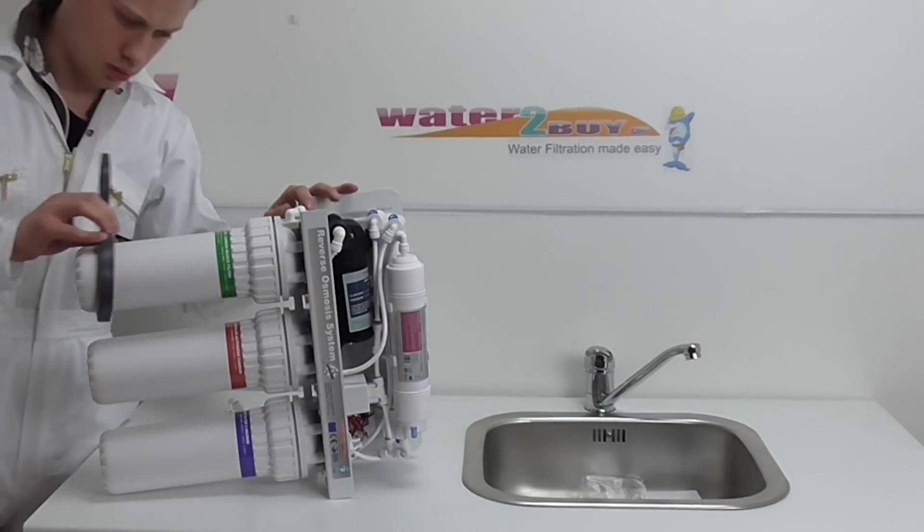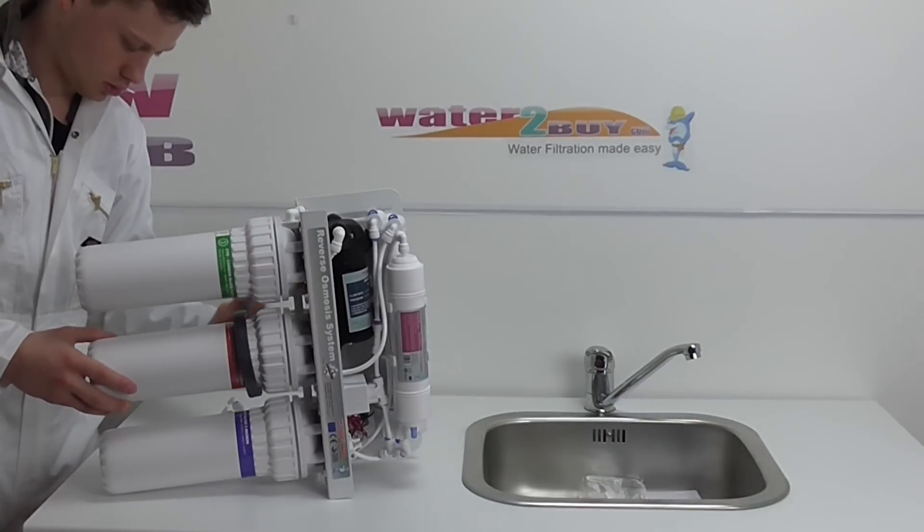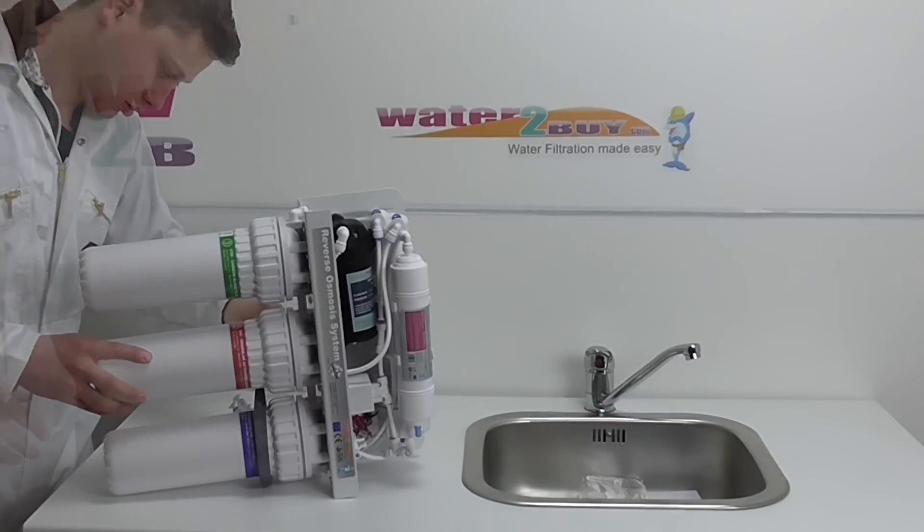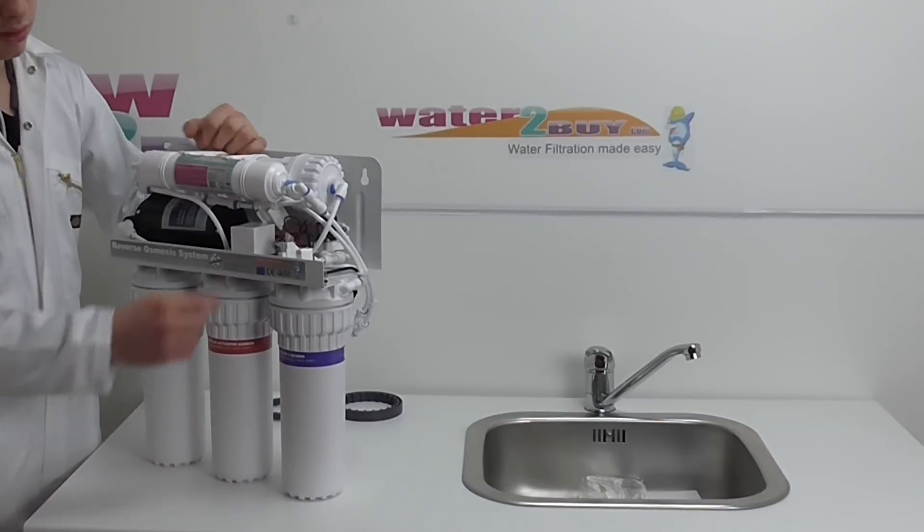Make sure you don't over-tighten as this will cause the O-rings to leak. The blue filter reduces particles. The red filter removes chemicals, particularly organic chemicals, and the green filter will eliminate any color, taste, or odor from your water.